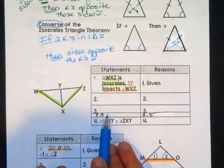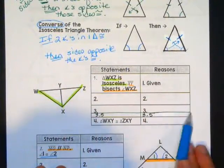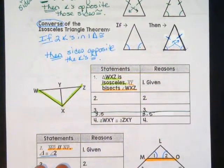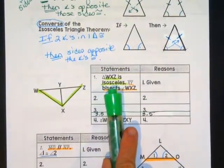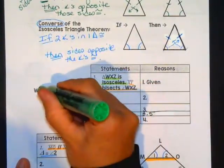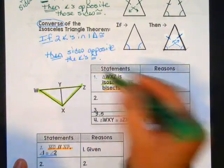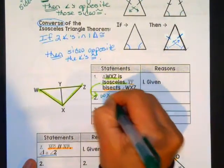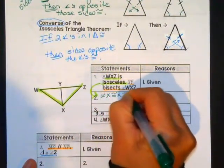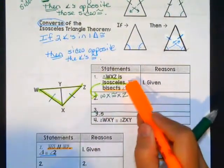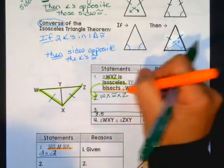This proof is actually missing a step, so I added a 3.5 so we could get one more statement in there. Notice the information they give me — I'm going to use it. Triangle WXZ is isosceles, so here's my isosceles triangle. That tells me WX is congruent to XZ, and I go ahead and mark those sides congruent.